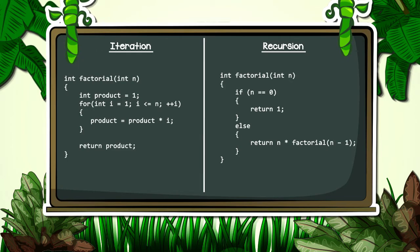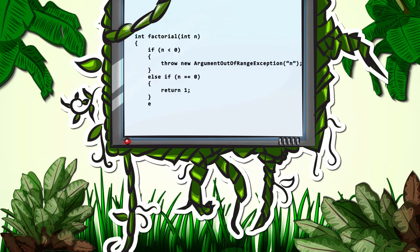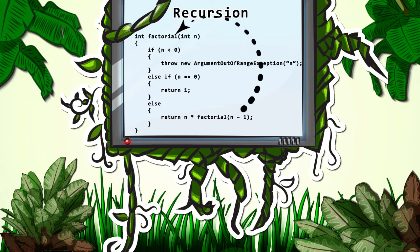In code, instead of using iteration to calculate the factorial, we use recursion. In this example, instead of looping, we use recursion to get the answer. Recursion is a function that calls itself, passing in a value with each call.